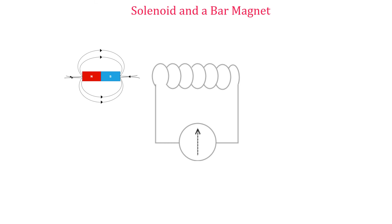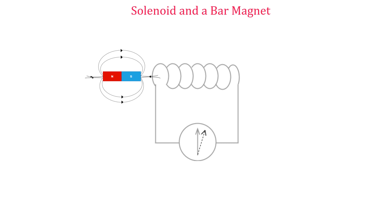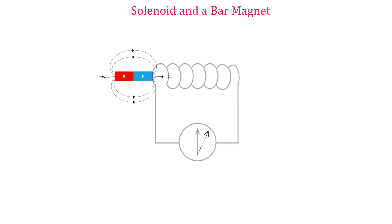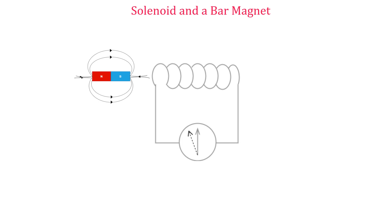Now let's consider a coil and a bar magnet. The ends of the coil are connected to a galvanometer. When the magnet is brought near or pushed into the coil, the magnetic field lines of the bar magnet cut or interact with the coil. This causes an EMF to be induced and a deflection is seen on the galvanometer. Moving the magnet away from the coil in the opposite direction reverses the direction of the deflection. There is no deflection when the magnet is stationary, because the field lines are not cutting the coil.